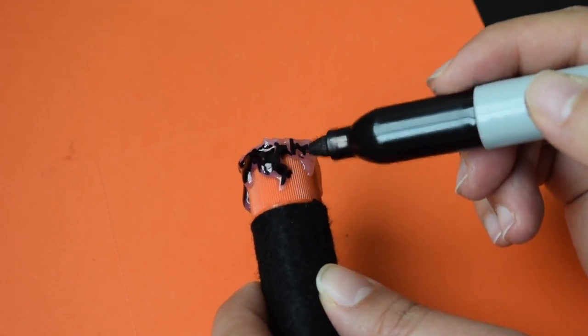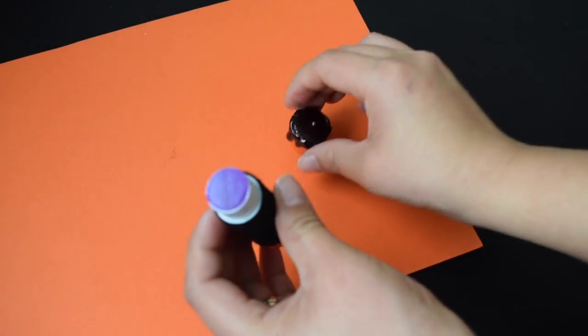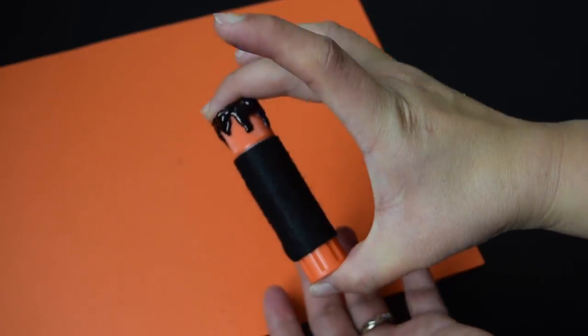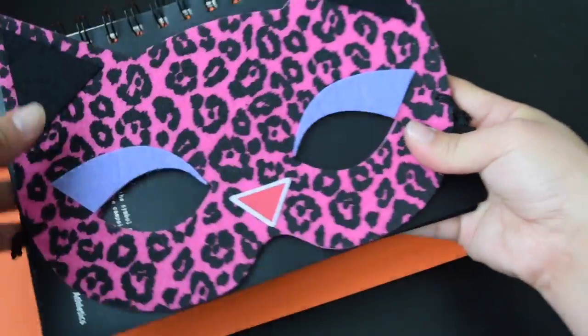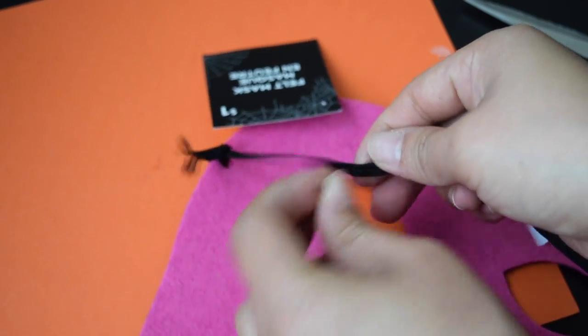Our third DIY is this leopard mask notebook. All we need are a mask and your black covered notebook. I got this mask for a dollar at Walmart. Instead of you wearing the mask, it's your notebook.